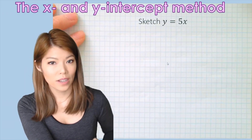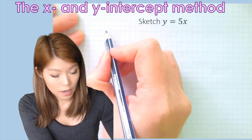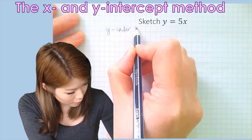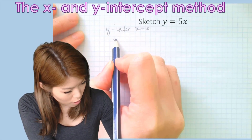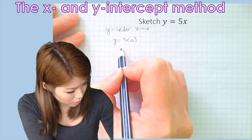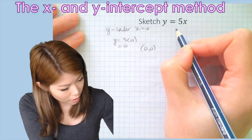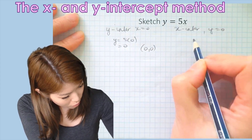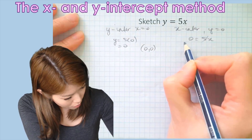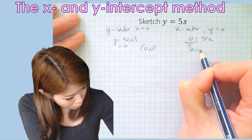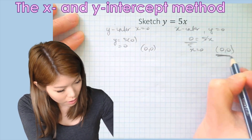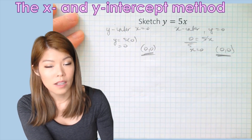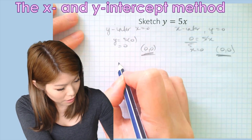This next one is quite tricky. For the y-intercept at x equals 0: y equals 5 times 0, which is 0 — so the point is (0, 0). For the x-intercept at y equals 0: 0 equals 5x, divide both sides by 5, giving x equals 0 — also (0, 0). This is problematic because we technically have the same point — we only have one point. So we have to find another point.